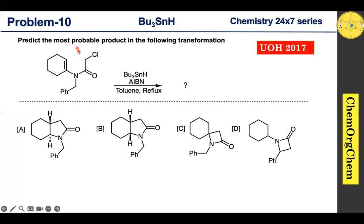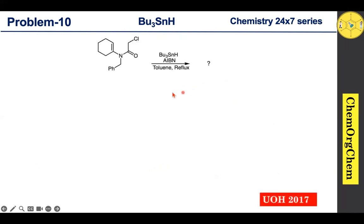This problem is from the University of Hyderabad PhD entrance exam 2017. According to this question, a substrate reacts with tributyl tin hydride in the presence of AIBN to produce a product. There are four options given — let's figure out together which one is correct.